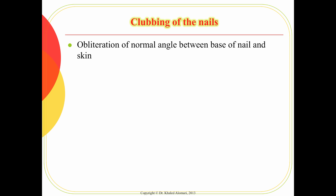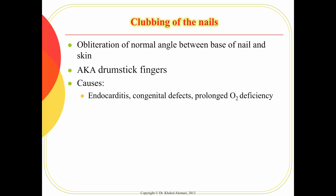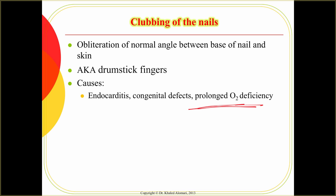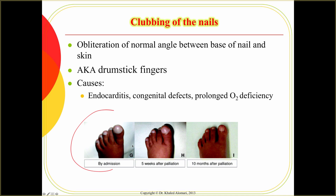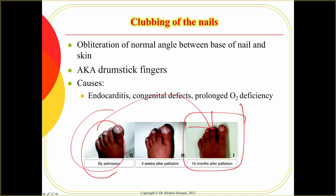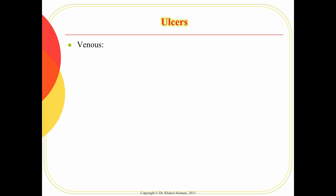Another serious sign is clubbing of the nails, also known as drumstick fingers. This is mainly associated with severe or prolonged deficiency of oxygen. As you can see, this is how a patient's nails appeared at the time of admission before oxygen therapy, and after treatment they returned — though not entirely to their normal shape.